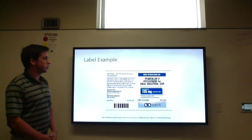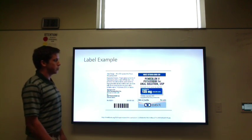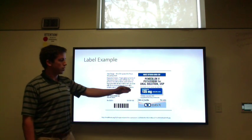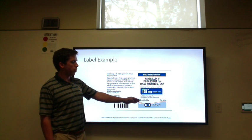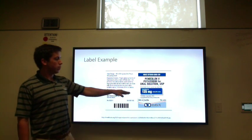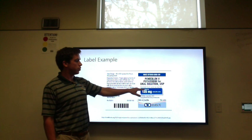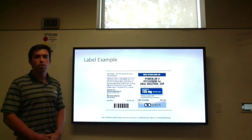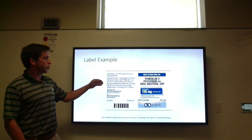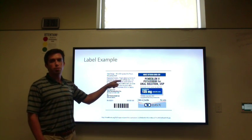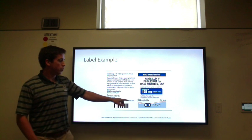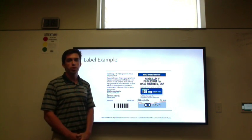This is a typical label example you'll see on the penicillin bottles. It'll have your dispensing instructions, your concentration, and the total volume of the bottle. For this prescription of penicillin, you have a concentration of 125 milligrams per 5 milliliters. The dispensing instructions call for 127 milliliters of water to be added to give you a total volume of 200 milliliters in the bottle.